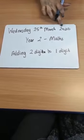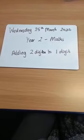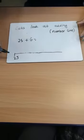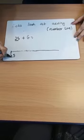Wednesday 25th March 2020, Year 2 maths, adding two digits to one digit. We're going to look at adding 25 plus 6 on a number line. We're going to start off with this digit here, which is 25.